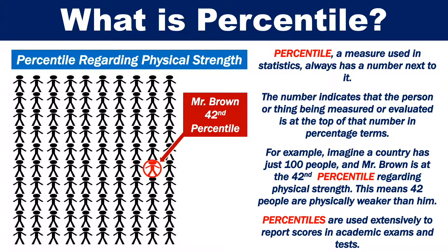For example, imagine a country has just 100 people, and Mr. Brown is at the 42nd percentile regarding physical strength. This means 42 people are physically weaker than him.